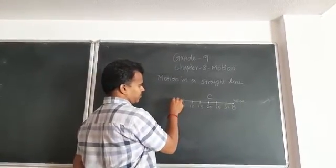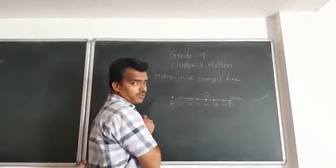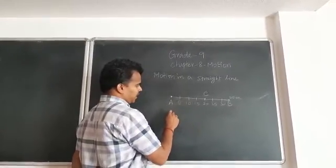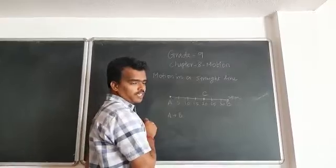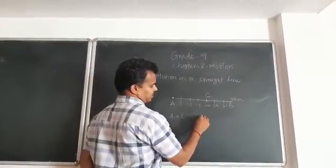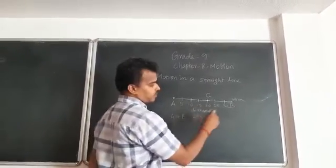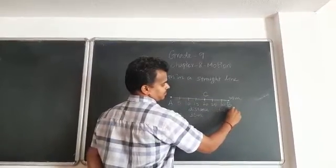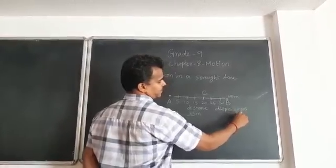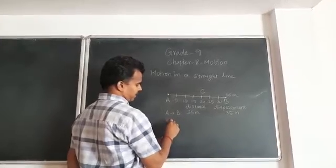Starting from home — that is zero, the reference position — we measure distance and displacement from there. Suppose a person starts from A and travels to B. The total distance covered is 35 meters. The displacement is also 35 meters in this case.